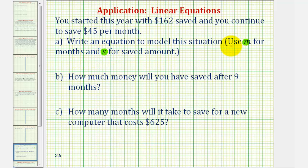So using these variables, S, the amount saved, would be equal to the starting amount saved of $162. And then because you're saving $45 per month, we would have to add, or plus, 45 times M, or 45M.